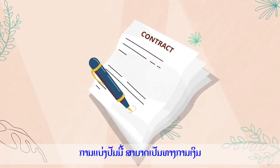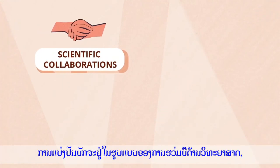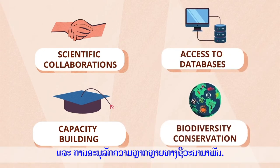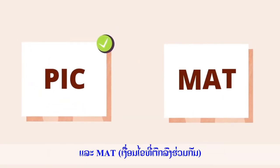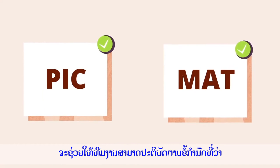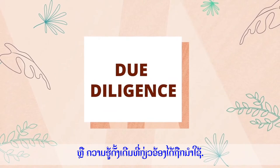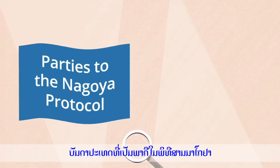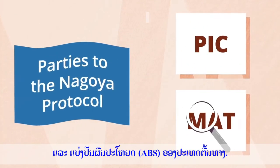This sharing can be monetary or non-monetary. For academic research, sharing often takes the form of scientific collaborations, capacity building, or access to databases in connection with the study and conservation of biodiversity. Securing PIC and MAT allows the team to satisfy the requirement known as due diligence, in the country where the genetic resources or associated traditional knowledge are used. Countries that are parties to the Nagoya Protocol must ensure that such use is in compliance with the ABS laws of the country of origin.